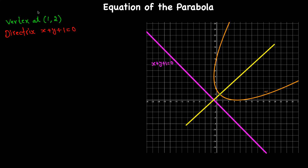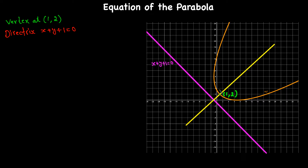We are going to find the equation of the parabola when given the vertex and the directrix. In this problem, the vertex is at (1, 2) — I drew it using a graphing calculator. We need to write the equation of the parabola from the given information. The vertex is at (1, 2) and the directrix is x + y + 1 = 0. The focus is unknown.